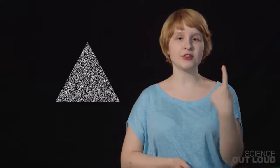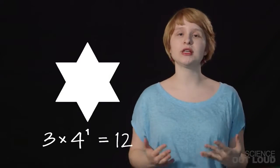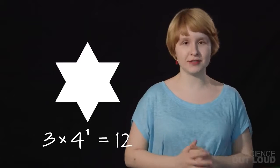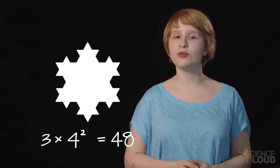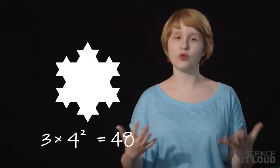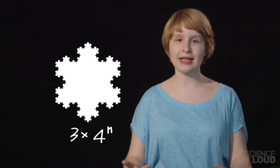We can actually draw a Koch snowflake on the computer by having it repeatedly graph a mathematical equation. Each time we add a triangle, one side of the Koch snowflake will turn into 4. After the first repetition, we'll get 3 times 4 to the first, or 12 sides. After the second repetition, we'll get 3 times 4 to the second, or 48 sides. After repetition number n, we'll have 3 times 4 to the n sides.